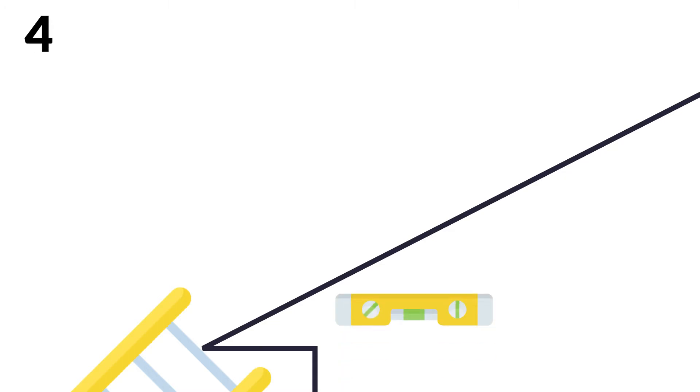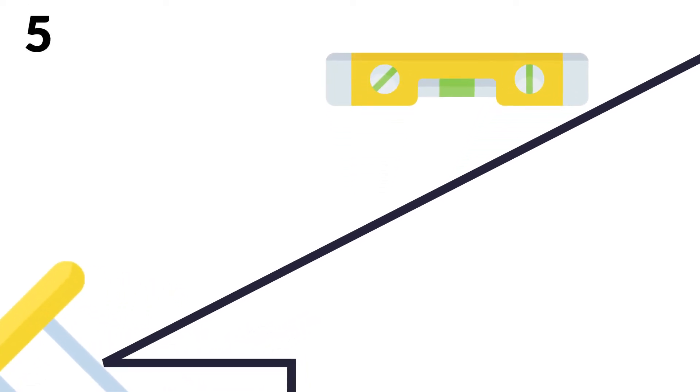Step 4: Place your level against the gable trim and flat against the side of the house. Step 5: Using the measuring tape, measure from the 12 inch mark on your level up to the bottom edge of your gable trim. This number is your rise.